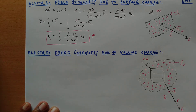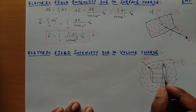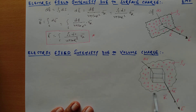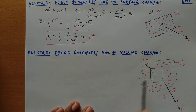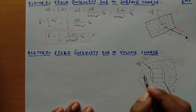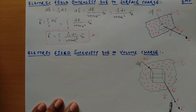Next we move to the electric field intensity due to volume charge. Here I have taken a cubical structure, and this differential element represents a volume structure. The charge distribution here has ρv representing the volume charge density. This differential element contains a differential amount of charges, and since it is a cubical structure we take the differential volume dv. We need to find the electric field intensity at a point P, which is at distance r from the element, and ar represents the unit vector.